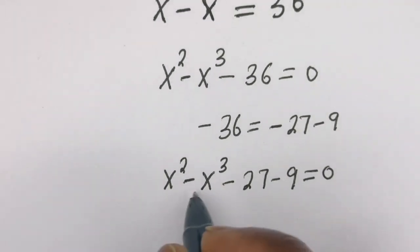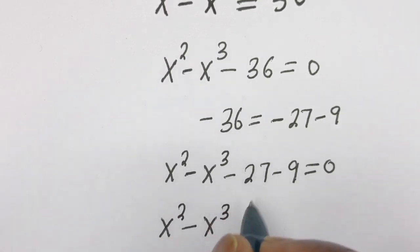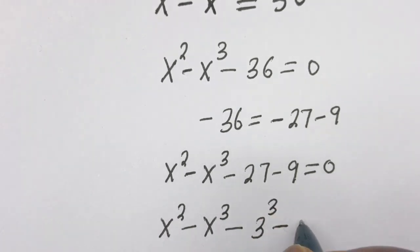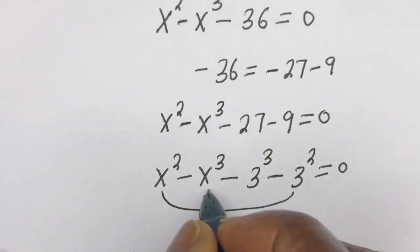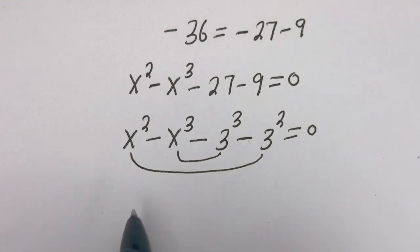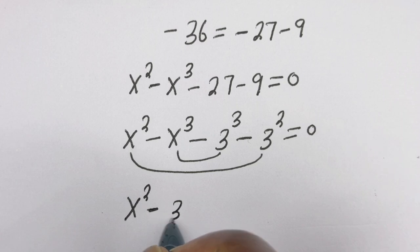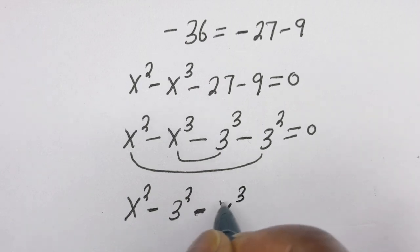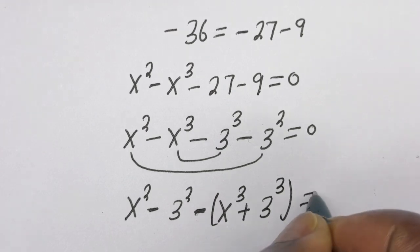Now let's compare. Here s squared minus s to the power of 3 minus 27 can be linked as minus 3 to the power of 3, and minus 9 can be linked as minus 3 squared, is equal to 0. So let's compare this to this and this to this. This gives us minus s to the power of 3 plus 3 to the power of 3 is equal to 0.